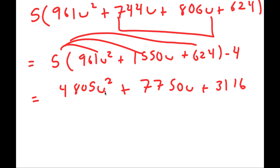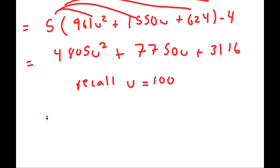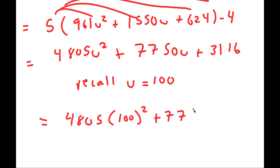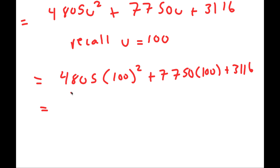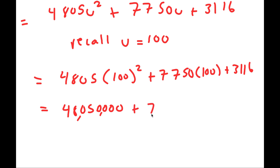The last step is to plug in u equals 100. It's not hard because we're just working with hundreds. 100 squared is 10,000, so 4,805 times 10,000 — we just add four zeros — gives 48,050,000. Then 7,750 times 100 gives 775,000, plus 3,116.